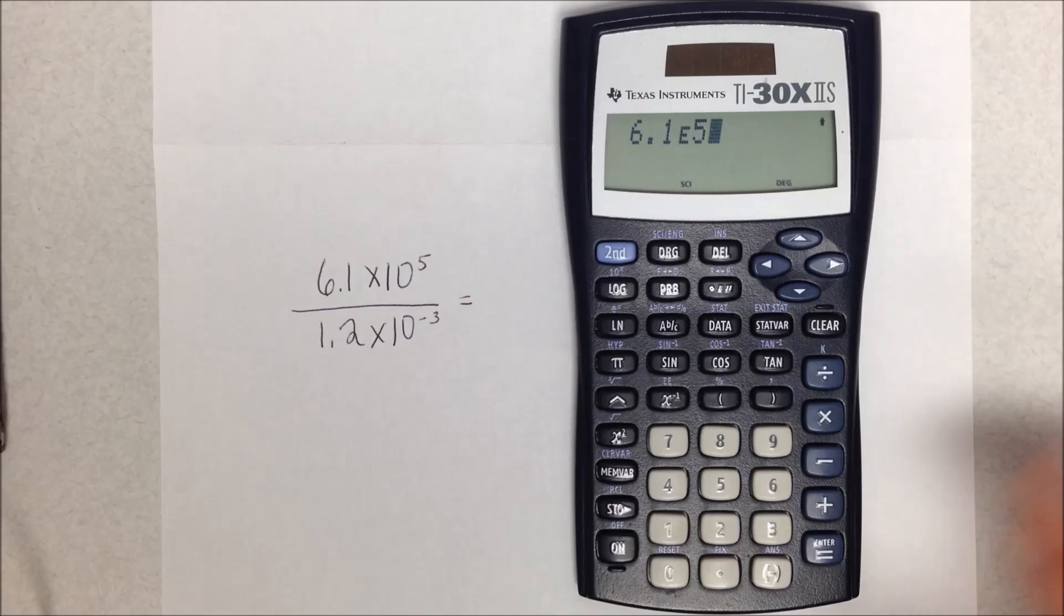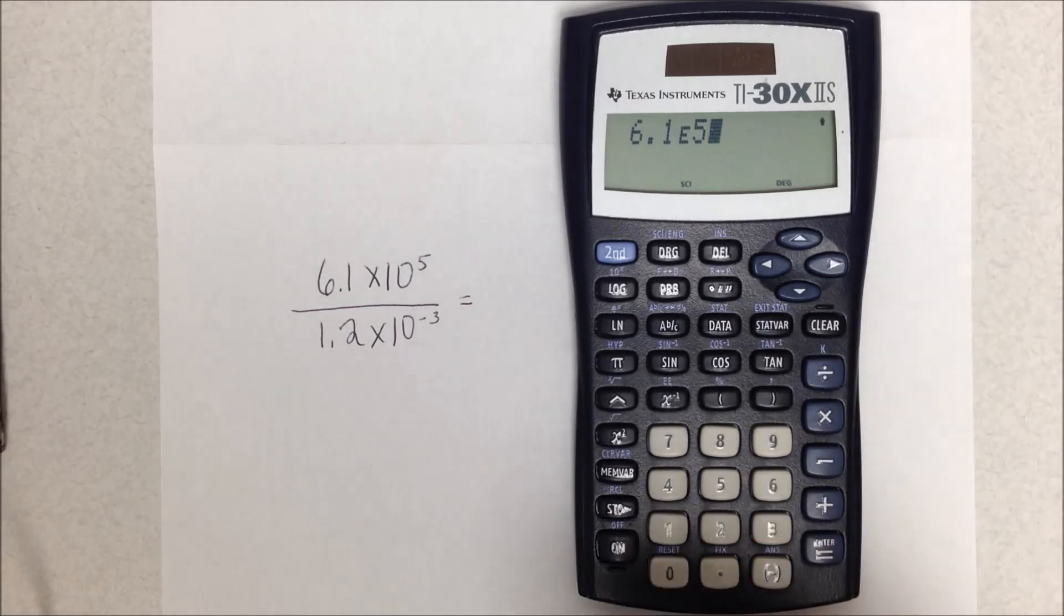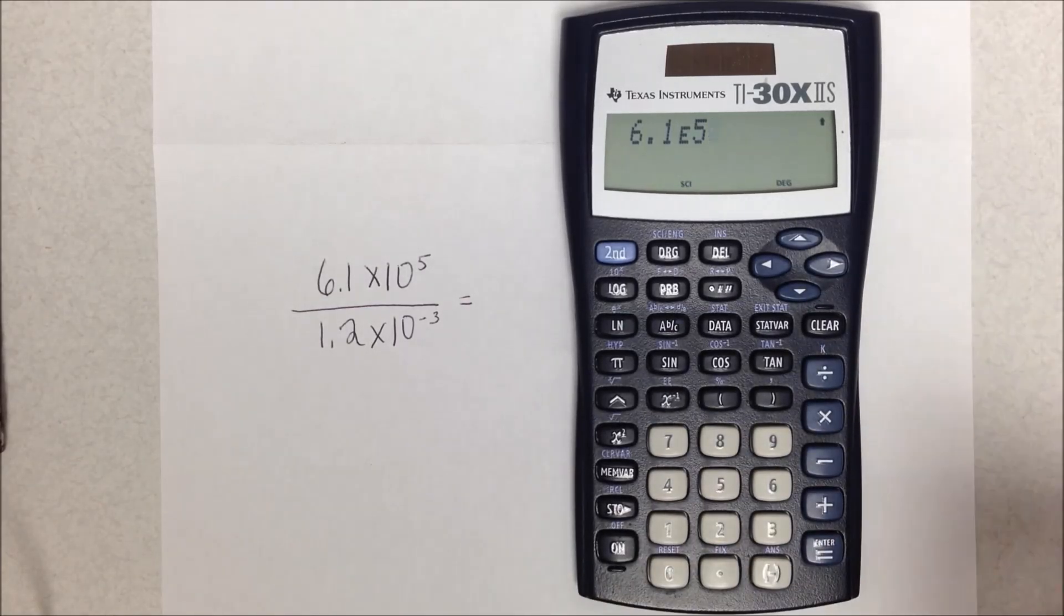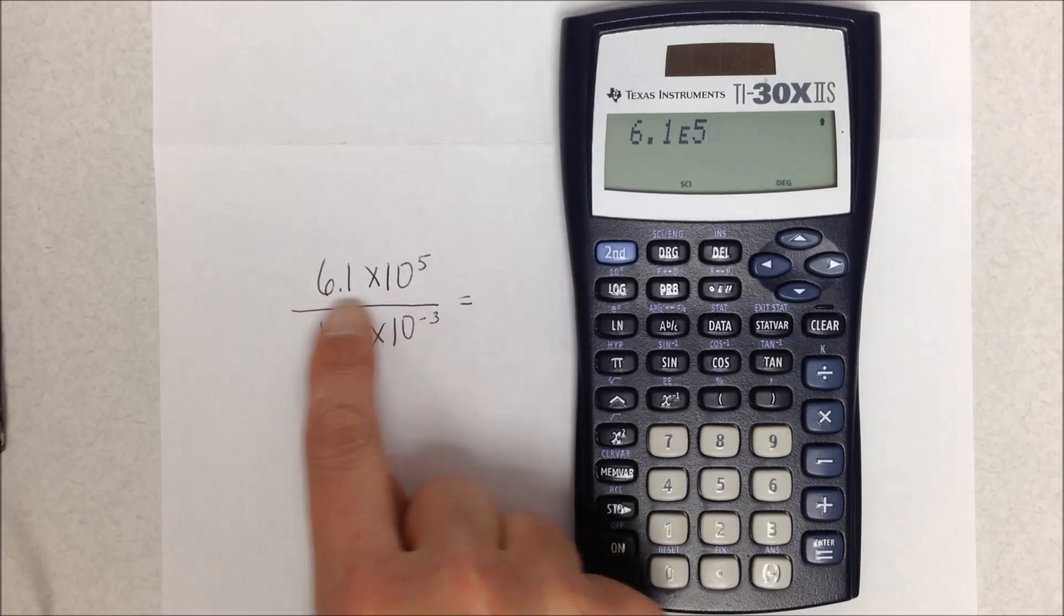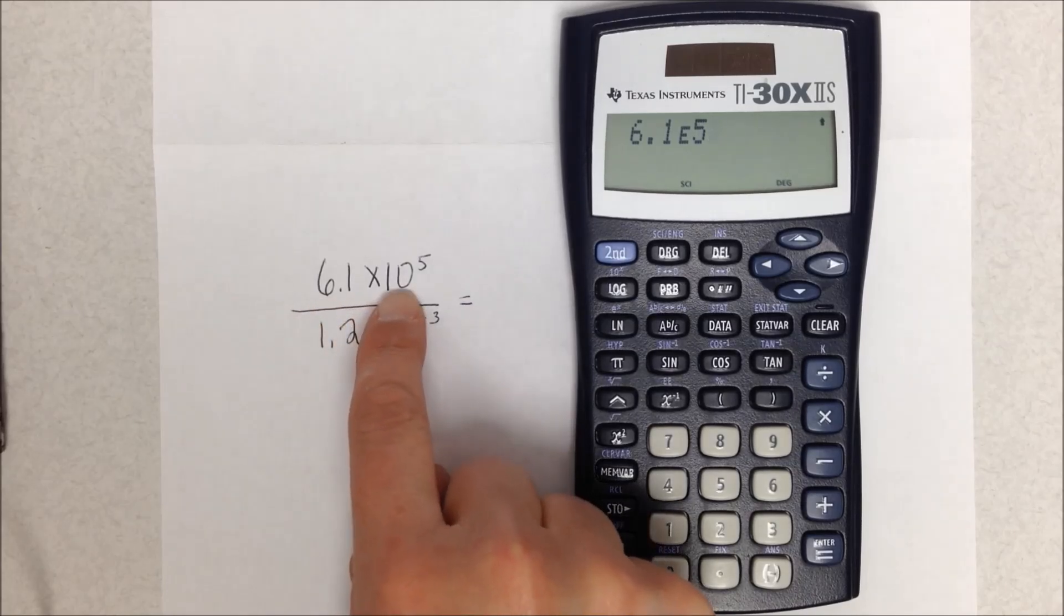Now note I did not put a multiplication sign in, I did not type 10. I just put 6.1 E to the fifth, and that means exactly the same as this—as 6.1 times 10 to the fifth.